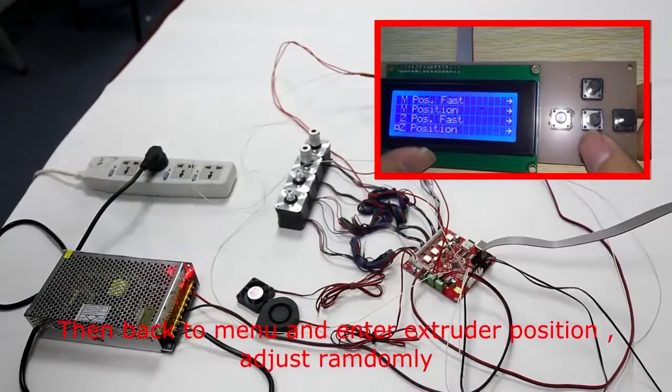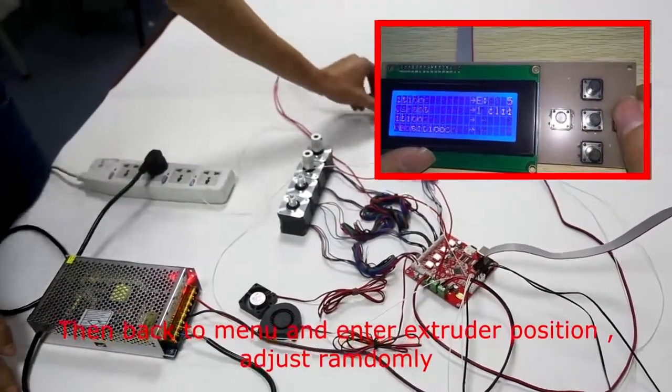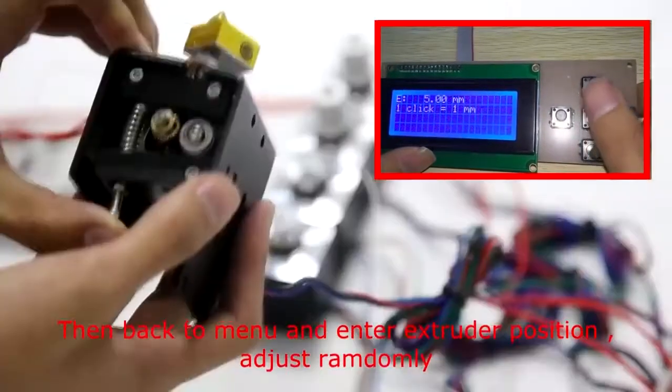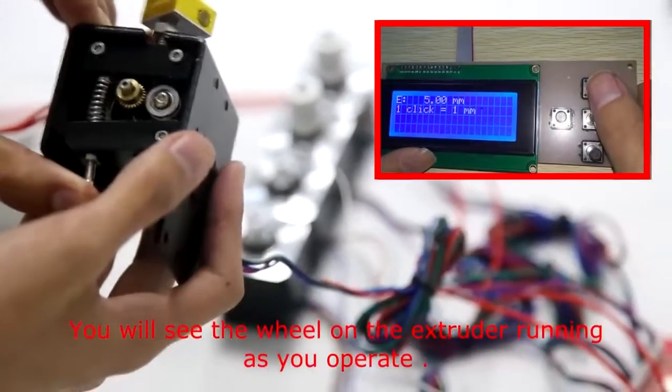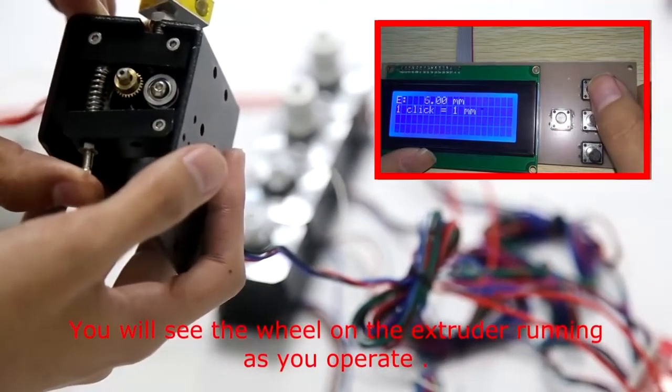Then, back to menu and enter extruder position. Adjust the control. You will see the wheel on the extruder running as you operate.